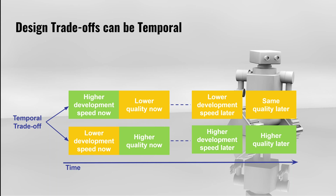Looking at this chart, it looks like prioritizing software quality early on is the better choice, and in many cases I would agree. But this may not always be the case. In some situations, getting a quick-and-dirty solution out fast is more valuable than getting a higher-quality solution out later on. This is often the case when making an MVP — a minimum viable product — or sometimes when fixing critical errors to an important system. The lower quality can in these situations be fixed later on.